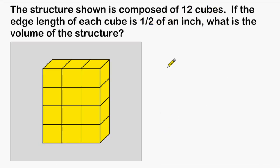A second strategy that can be used to find the volume of this rectangular prism is to find the volume of each individual cube, and then multiply that volume by twelve, because we know that there are twelve cubes present. So let's just examine the volume of an individual cube.